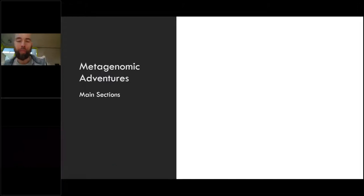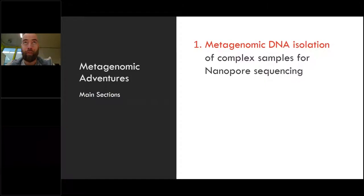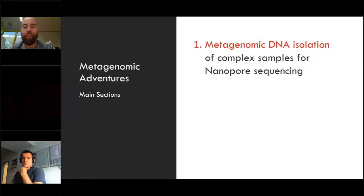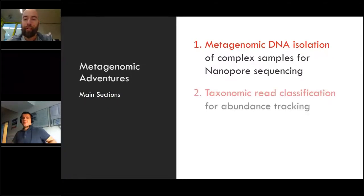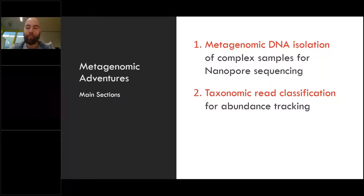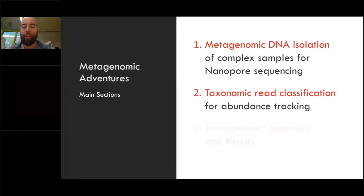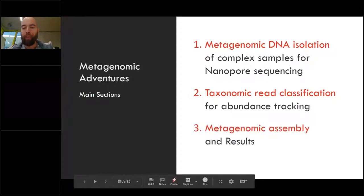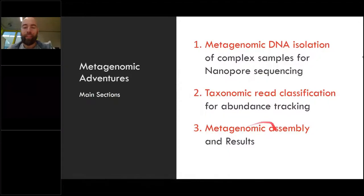Now going to the actual presentation main parts. This talk serves as a complete overview of what you need to do for metagenomic sequencing. The first part will cover DNA isolation — usually not addressed in many talks because there aren't nice colorful result figures, but I want to show important aspects if you want to do sequencing on your own for metagenomic samples. The next part is taxonomic read classification, and the last part addresses metagenomic assembly and results — from the wet lab down to bioinformatic result interpretation.